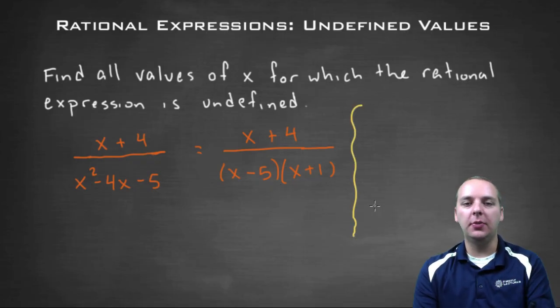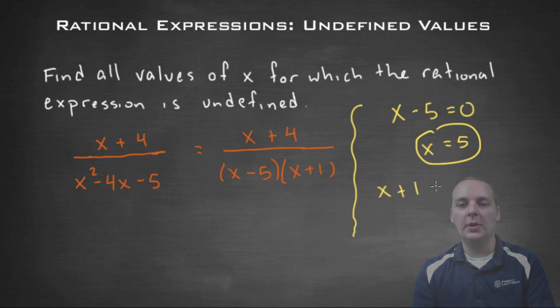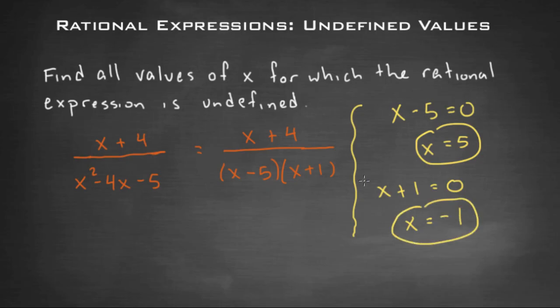We're going to set each of them equal to zero. So we'd have x minus five equal to zero. That would give us x equals five. And then we'd have x plus one equal to zero. And that would give us x equals negative one. So here we actually had two values that made the rational expression undefined.